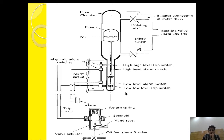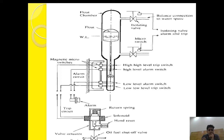The boiler water level needs to be maintained properly. Sometimes due to priming, gas formation, or a fracture in the line, a low water level alarm can occur, and necessary action must be taken. When the magnet is moving to any of its switch positions, the corresponding micro switch completes the alarm circuit.